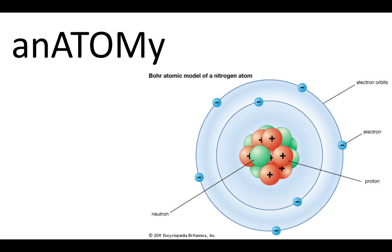An atom's element — whether or not it's gold — is defined by the number of protons it has. So if you somehow managed to add an extra proton to gold, bringing it from 79 to 80, it would become an atom of mercury, because mercury has 80 protons. This is impossible. It's called alchemy — people tried to turn steel into gold back in medieval times. It's not possible to add protons to matter to change the element it's made of.